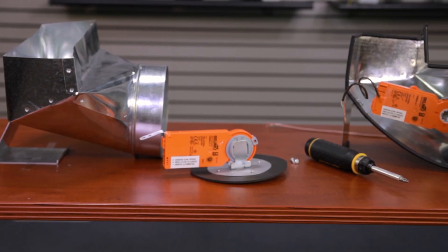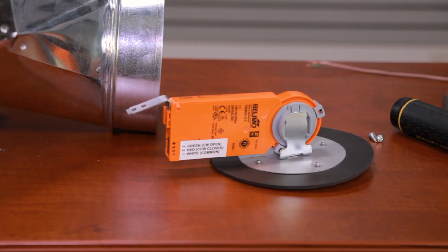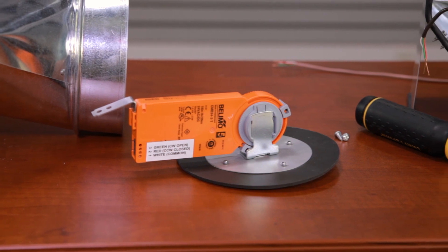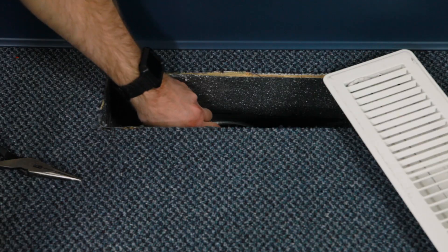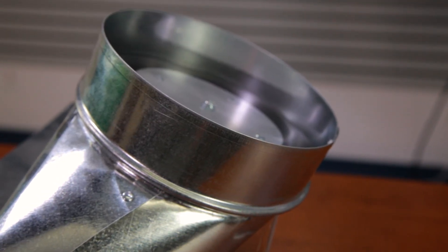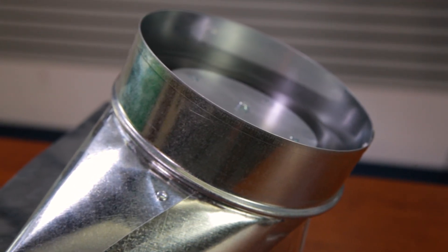What is the RBD? It's a retrofit zone damper that's been designed to be installed inside the register boot without having to take the ductwork apart. RBDs are available for boots with 6 or 8-inch collars and can be installed in most boot styles.